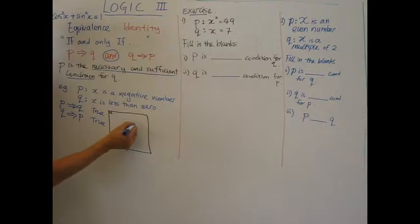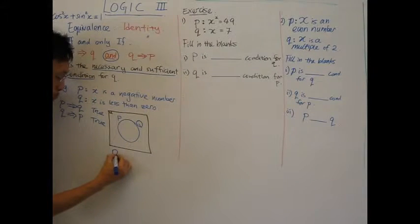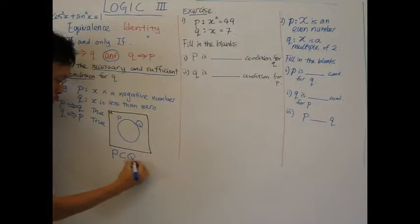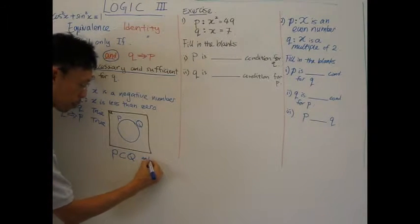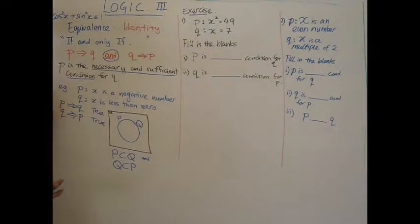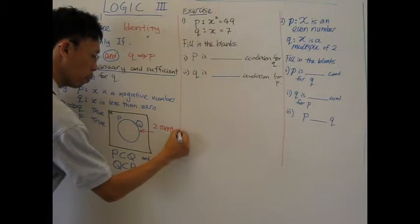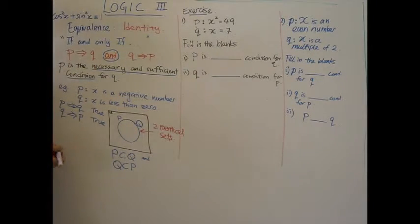In terms of a Venn diagram, basically you have to draw like this. This is my set P and at the same time this is also my set Q. In terms of a set, capital P is a subset of capital Q and capital Q is a subset of P. In this case, we have equivalence. These two are identical sets. Identity.